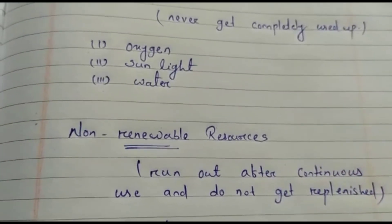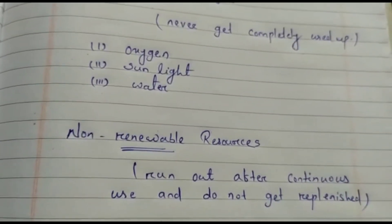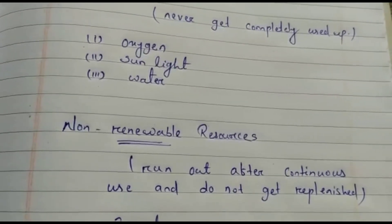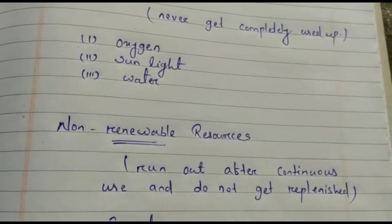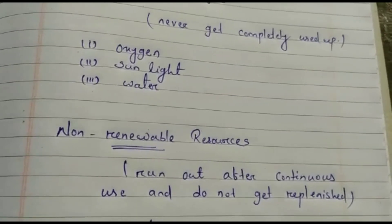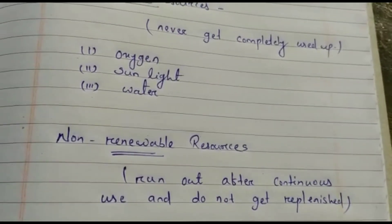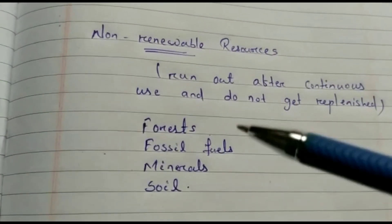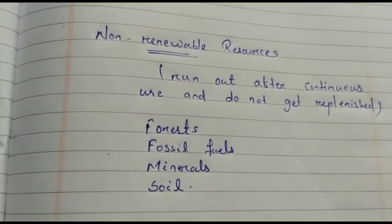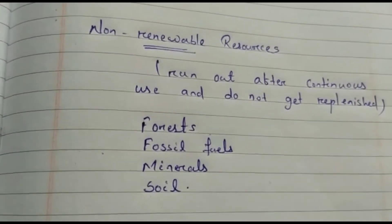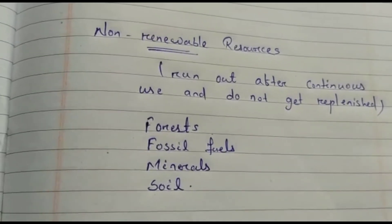Non-renewable resources are the resources which run out after continuous use and do not get replenished in a long time. For example, forests — we cut forests for various purposes, and even if we plant trees, it is not possible to create a forest in a short time. So forests are considered a non-renewable resource.